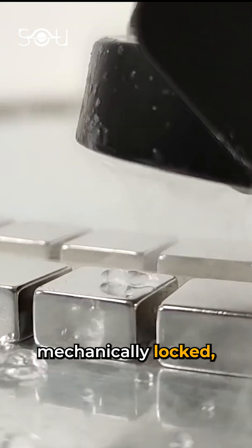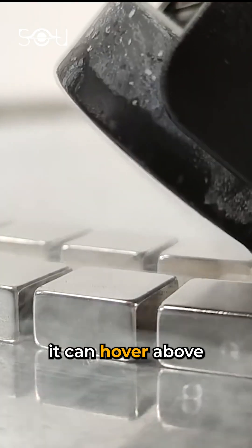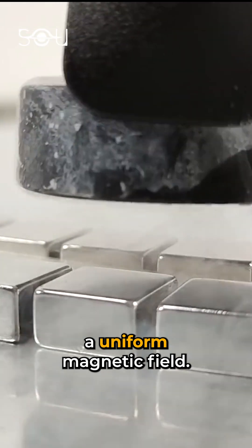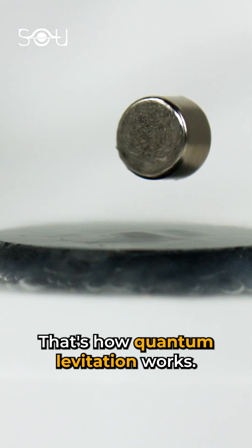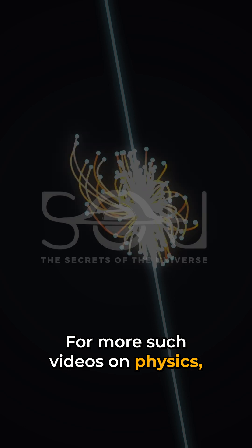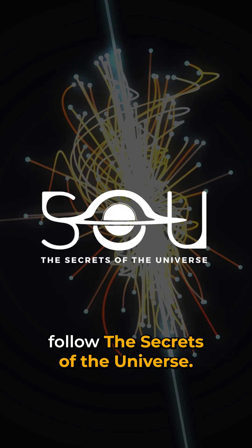Once the system is quantum mechanically locked, it can hover above a uniform magnetic field. That's how quantum levitation works. For more such videos on physics, follow the Secrets of the Universe.